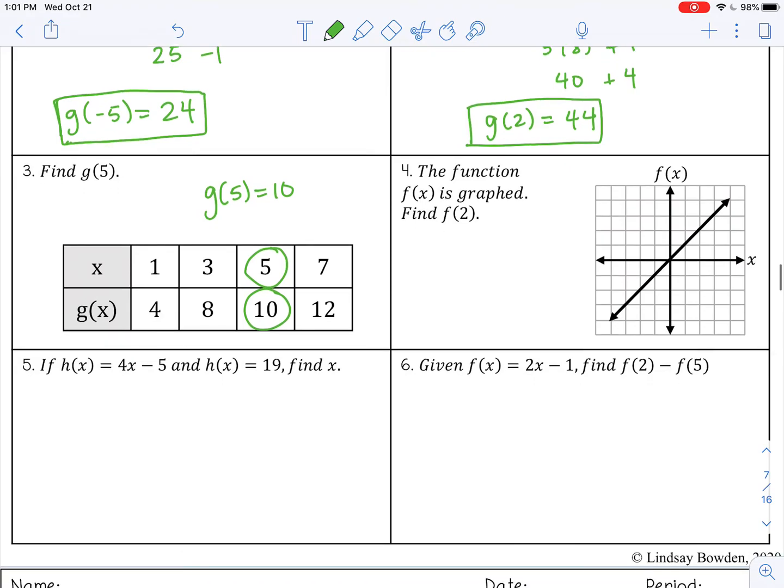When you have a graph, the function f of x is graphed, find f of 2. I'm going to find 2 on the x-axis, so 1, 2. And I'm going to go up to that value on my graph, which would be here.